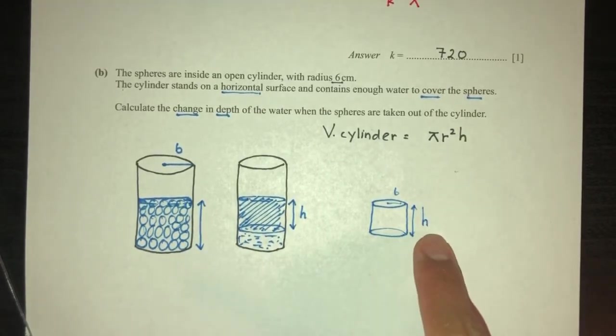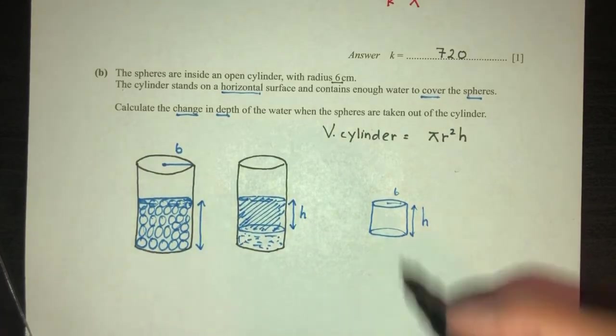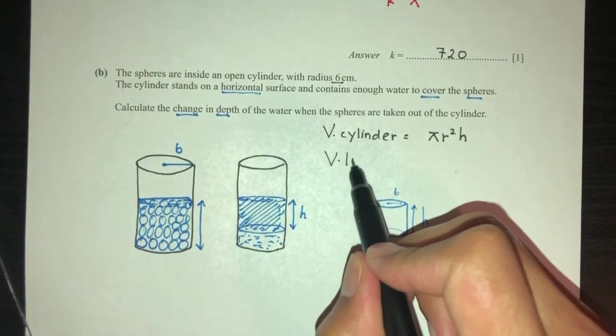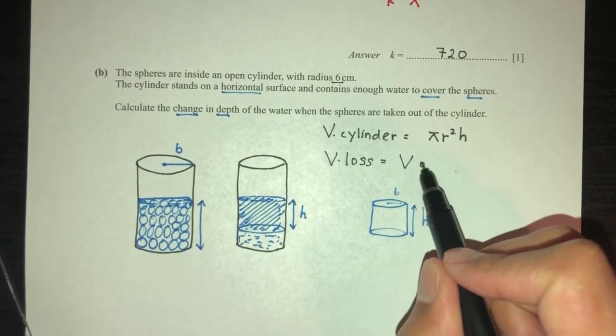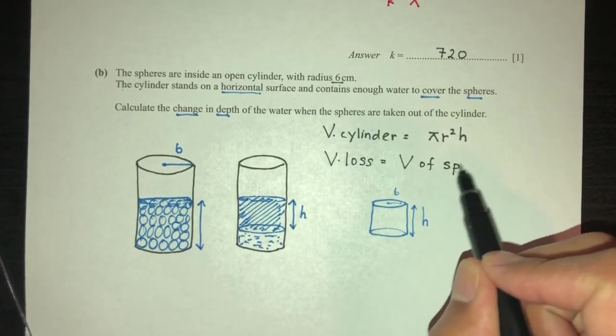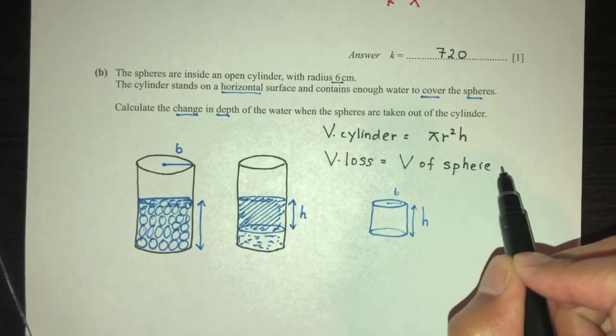So, we want to find the height of that loss in volume. Volume lost is equal to the volume of spheres, because we took out the spheres. We take out the spheres, and that will be the volume loss. This is the whole volume loss.